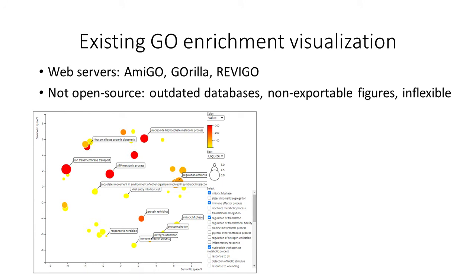Several enrichment visualization software have been developed that are able to summarize the biology behind these analyses and make it interpretable for the user. Some of the more popular ones are Amigo, Gorilla, and Revigo. Revigo especially has been popular, at least in my scientific circle. It uses semantic similarity analysis, grouping functionally similar gene ontology terms together, and it produces an easy-to-interpret visualization of your GO enrichment analysis.